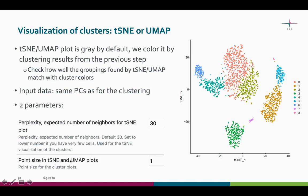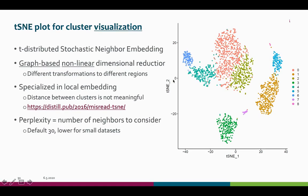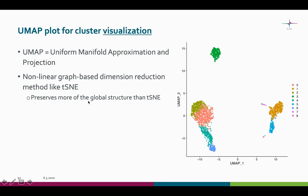The visualization step has two parameters: the point size for the plot, and the perplexity for TSNE. Perplexity means the expected number of neighbors — if you have very few cells, set this to a lower number. There are certain differences between TSNE and UMAP. TSNE is specialized in local embedding, so the distance between clusters is not meaningful. UMAP, however, preserves more of the global structure than TSNE, so the distance between groups tells a little bit more.